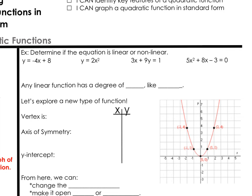Let's start off with a little review from chapter 2. Determine if the equation is linear or nonlinear. In our first example, y equals negative 4x plus 8. That looks like slope-intercept form for a line, and our exponent for x is just 1. So yes, that is a linear function.